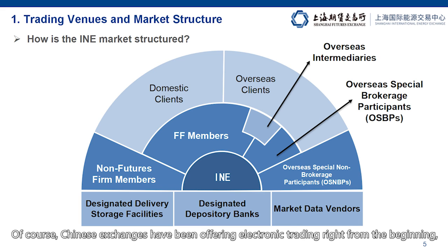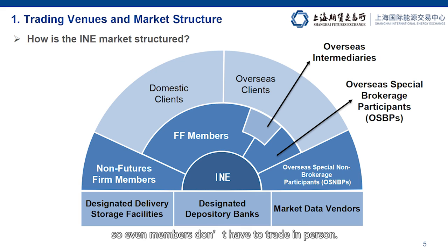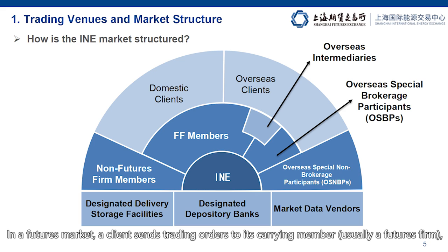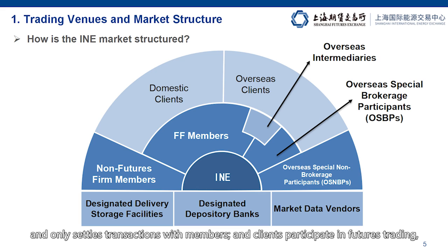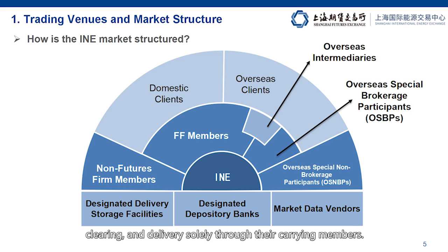Futures exchanges implement a membership system so that only members can trade on the floor. Chinese exchanges have been offering electronic trading right from the beginning, so even members don't have to trade in person. In a futures market, a client sends trading orders to its carrying member, usually a futures firm, who then forwards it to the exchange for central matching. In other words, the exchange only accepts trading orders from members and only settles transactions with members. And clients participate in futures trading, clearing and delivering solely through their carrying members.